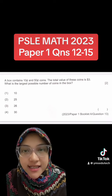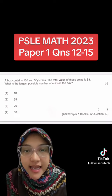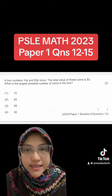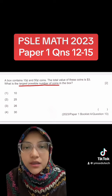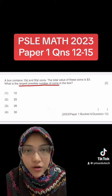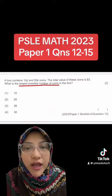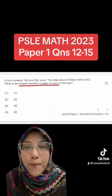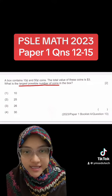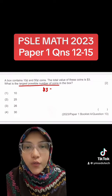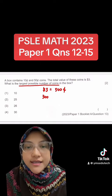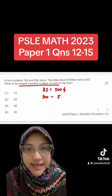Question 13. A box contains 10 cents and 50 cents coins. The total value of these coins is $3. What is the largest possible number of coins in the box? To have the largest number of coins in the box, we need to have more 10 cent coins than 50 cents coins. Therefore, we're just going to have one piece of 50 cent coins. First, convert $3 to cents. That gives us 300 cents.